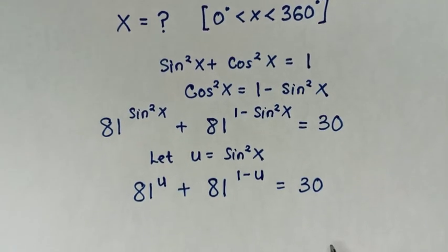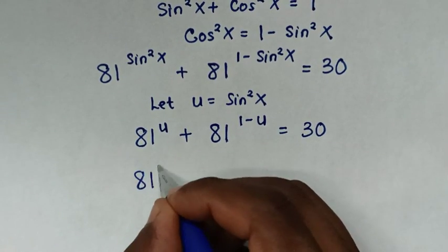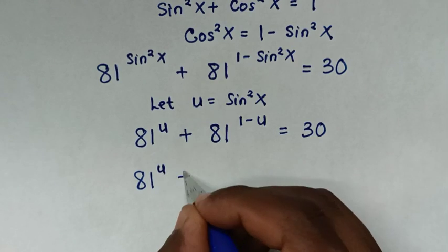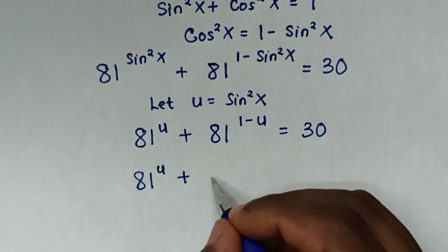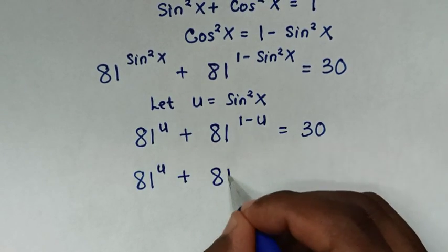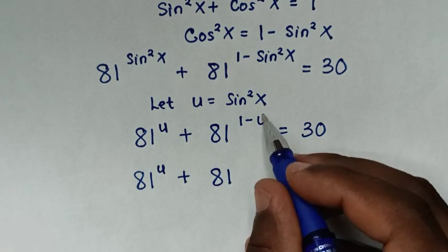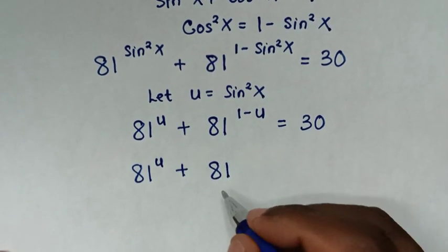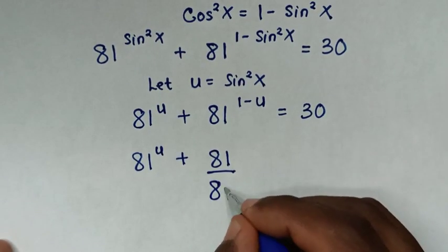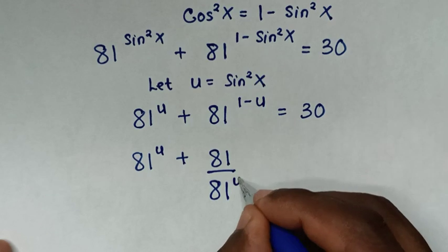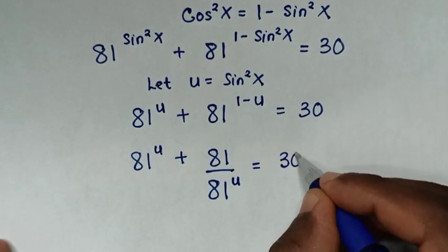So the equation becomes 81^u + 81^(1 − u) = 30. In the next step, 81^(1 − u) can be written as 81^1 times 81^(−u), which equals 81 over 81^u.